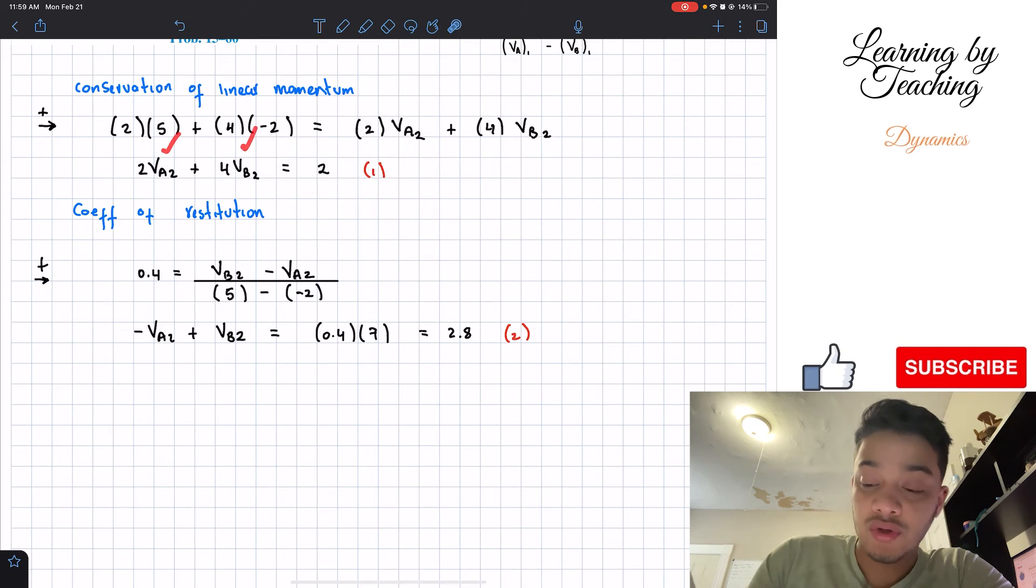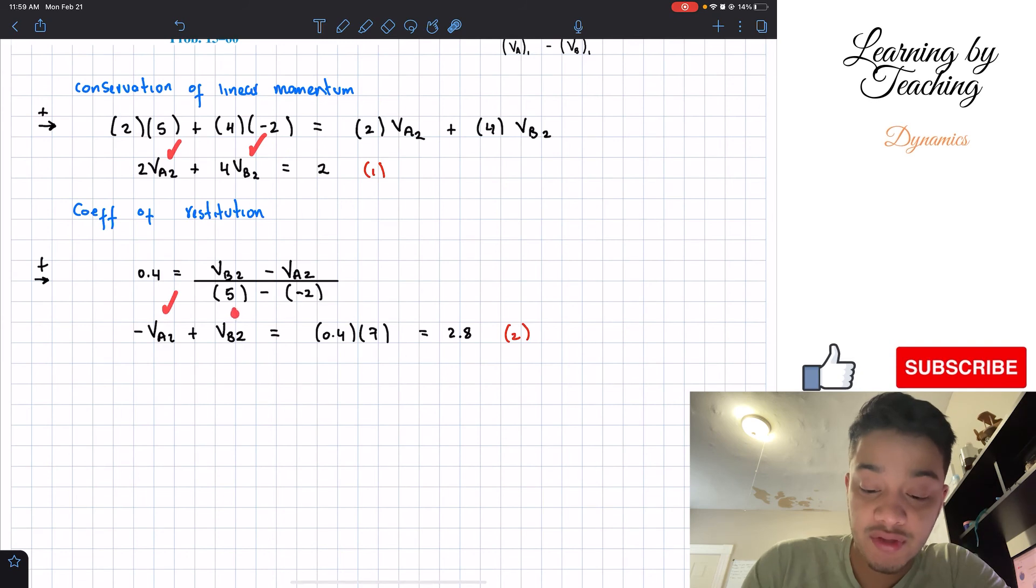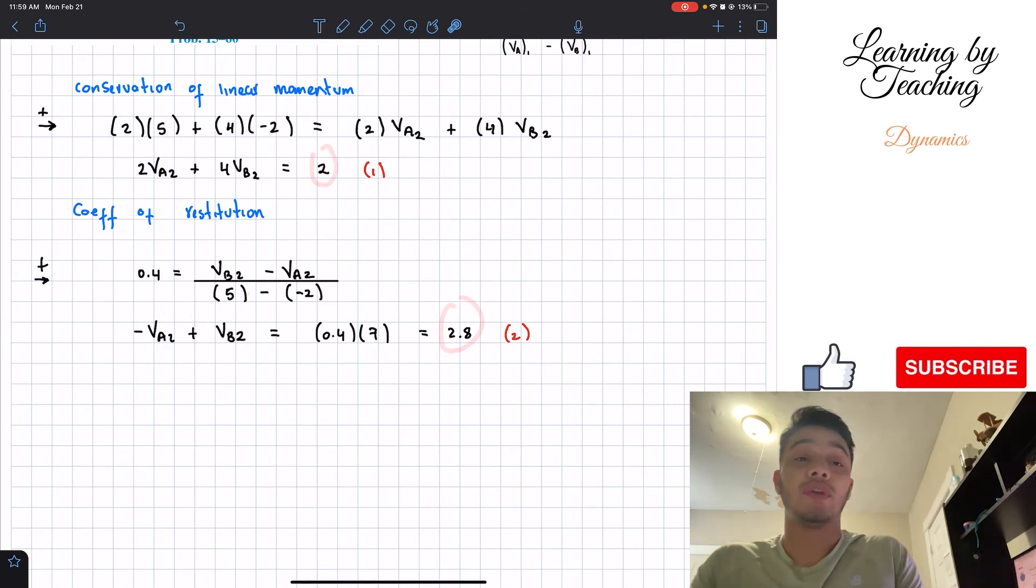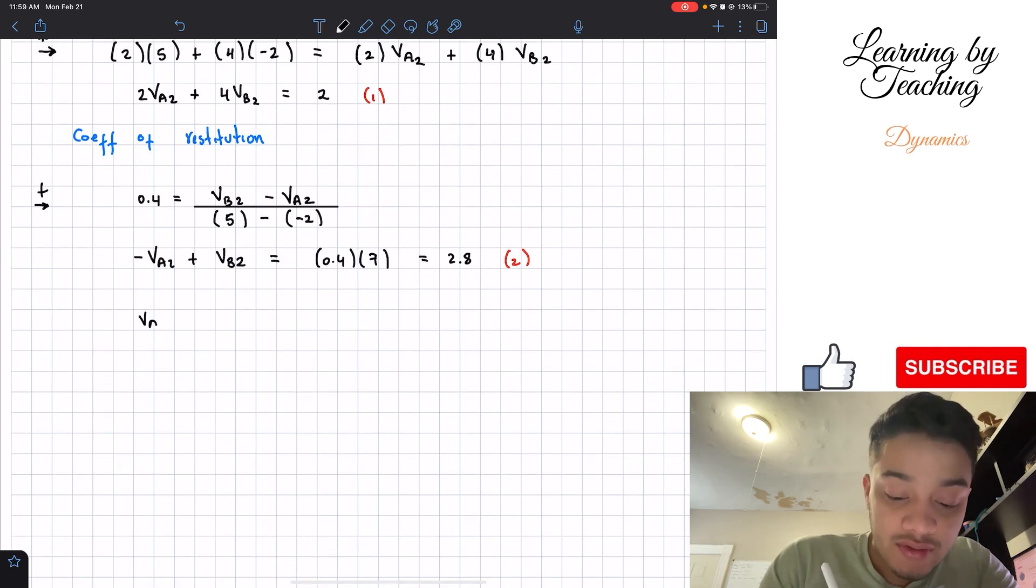So we got two unknowns, and we got two equations. So now we can utilize any type of system that you like to solve system of equations. I like utilizing matrices. That's why I set it up in this way. So I have my first variable, my second variable, first variable, second variable. And then I have my numbers without variables on the other side of the equation. Whenever we solve this, as I said before, I solve this by using matrices. I found out that the velocity of A after the collision is equal to negative 1.533 meters per second. And the velocity of B after the collision is equal to 1.267 meters per second.